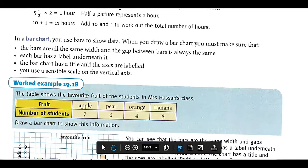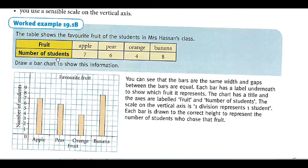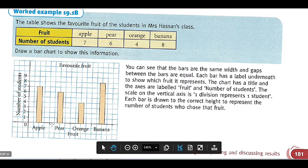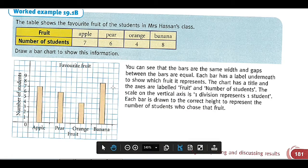If we're talking about bar chart, it's another example 19.1B. With the help of data, you can easily draw the bar chart. We have seven apples, so I will draw for apple. How many apples do we have? Seven. Number of students who like apples, we write here. The same way we just draw all this.